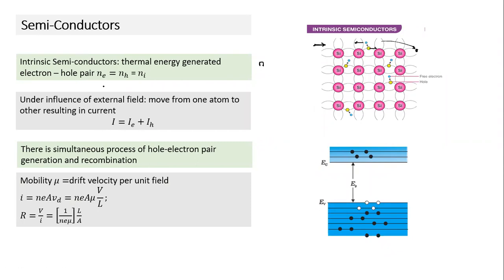Similar to current electricity where we used N (number of free electrons per unit volume) to derive conductivity and resistivity, something similar can be done for semiconductors. We use a term called mobility. Mobility is drift velocity per unit field — μ = Vd / E. Based on this mobility, we can find an expression for resistance and conductivity of a semiconductor.